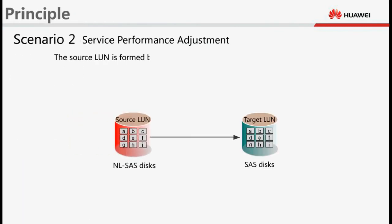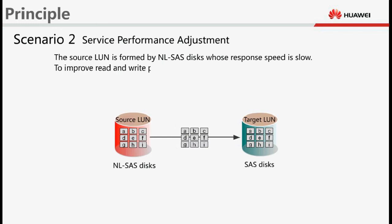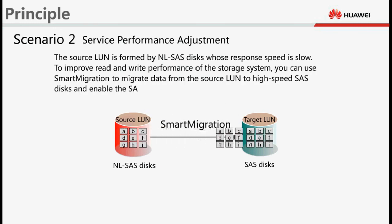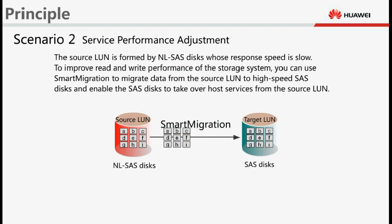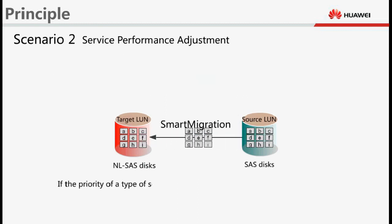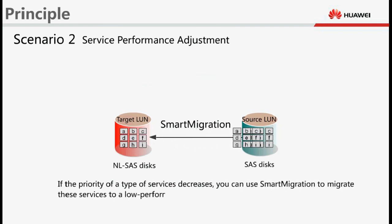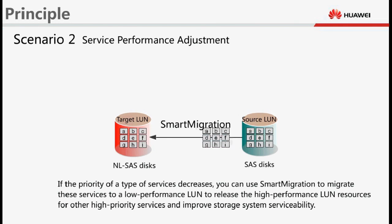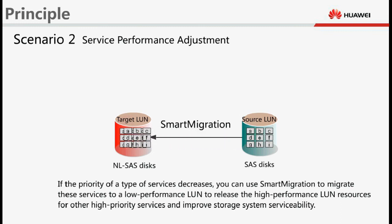For service performance adjustment, when a source LUN is formed by NL-SAS disks whose response speed is slow, you can use Smart Migration to migrate data from the source LUN to high-speed SAS disks and enable those disks to take over host services. Conversely, if the priority of a type of service decreases, you can use Smart Migration to migrate those services to a low-performance LUN, releasing high-performance LUN resources for other high-priority services and improving storage system serviceability.